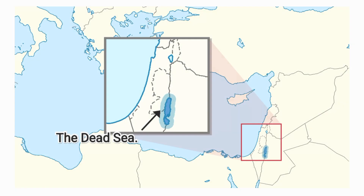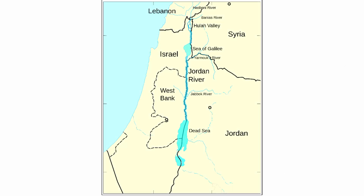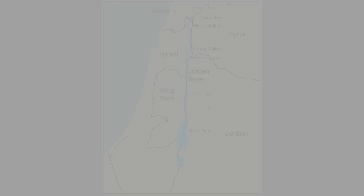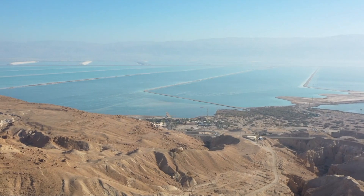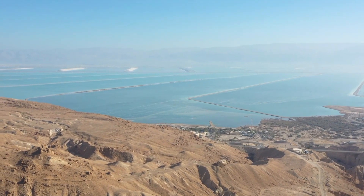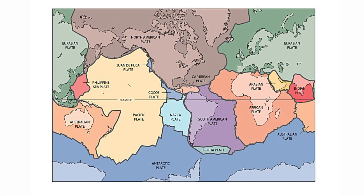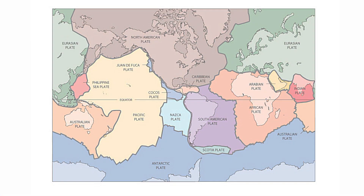The Dead Sea is a landlocked salt lake situated in southwestern Asia, on the borders of Israel, Palestine, and Jordan. The Dead Sea lies in the Jordan Rift Valley, on the tectonic plate boundary of the African Plate and the Arabian Plate.